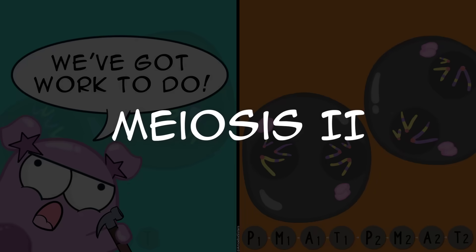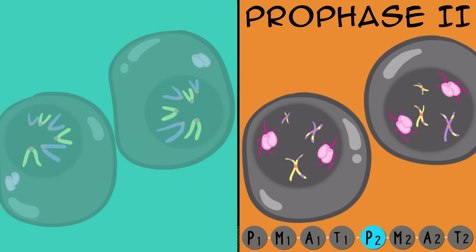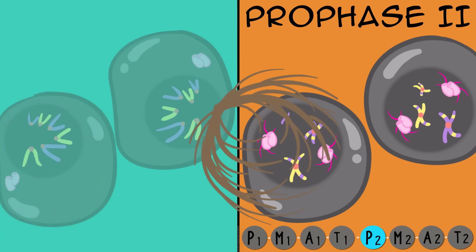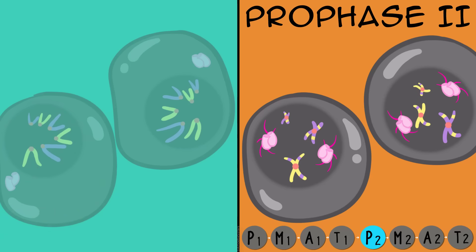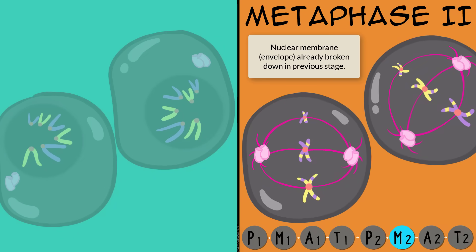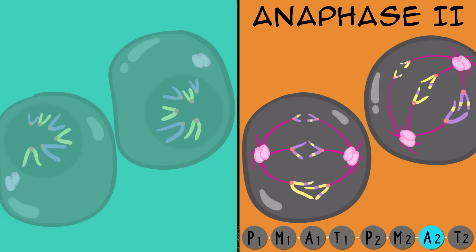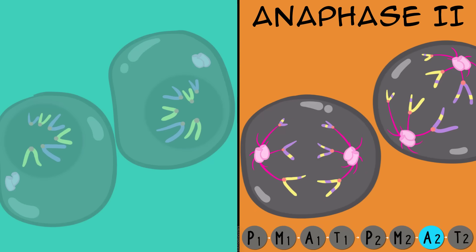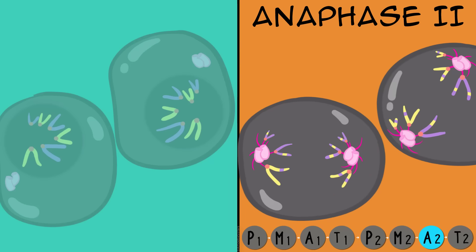Onto meiosis 2. Prophase 2: chromosomes are condensing in both cells. It's not going to be as eventful as prophase 1 because they're not going to have homologous pairs and crossing over. Metaphase 2: M for middle, but this time the chromosomes are in a single file line—similar to how metaphase looked in mitosis. Anaphase 2: think A for away. This time, though, it's actually the chromatids that are getting pulled away.